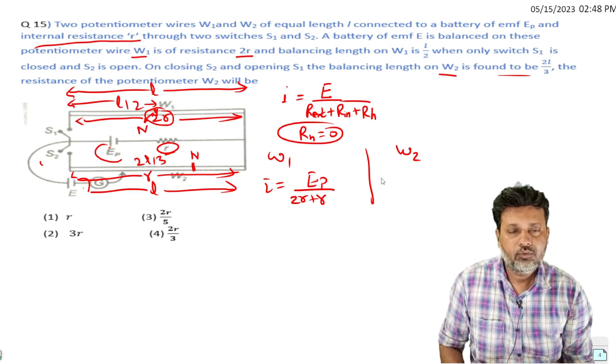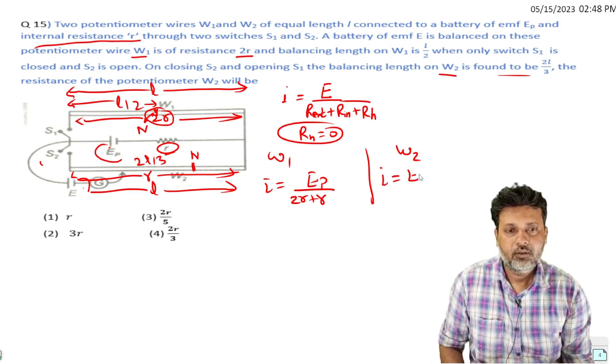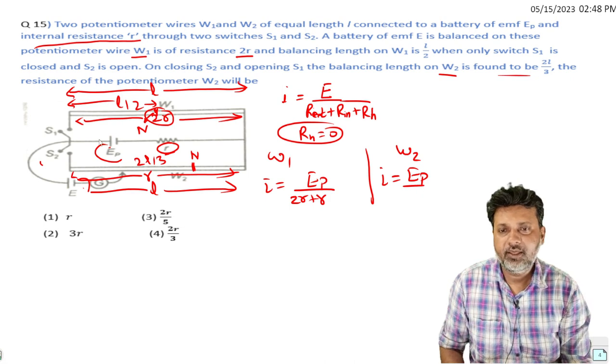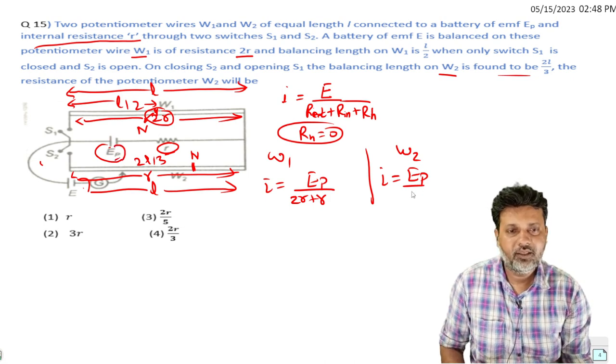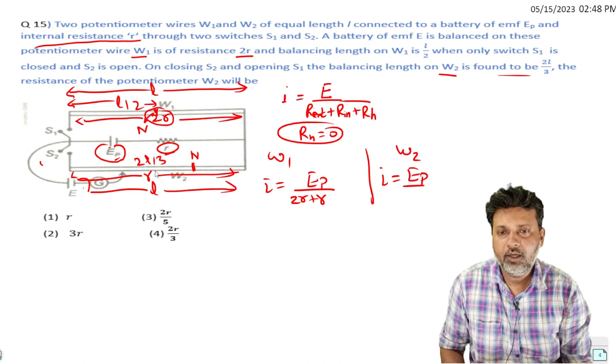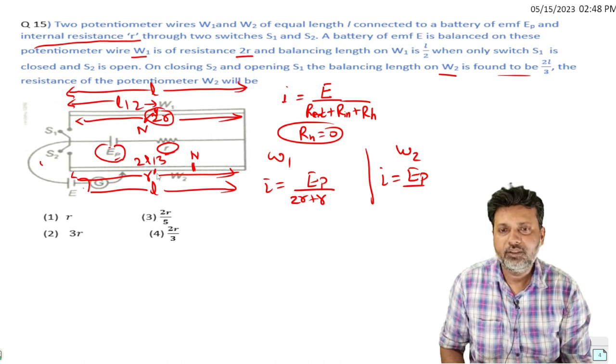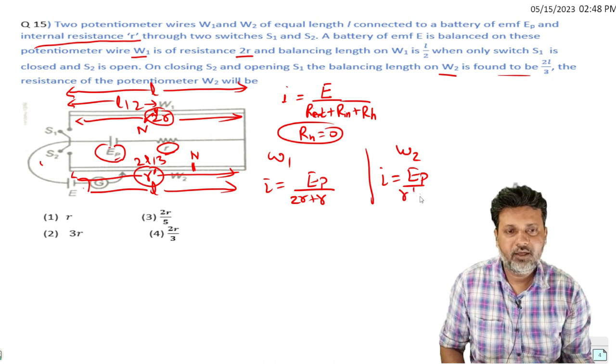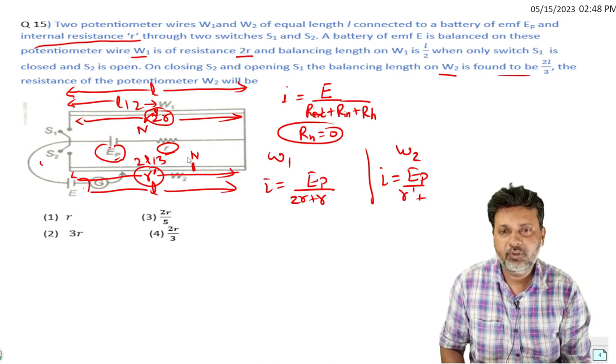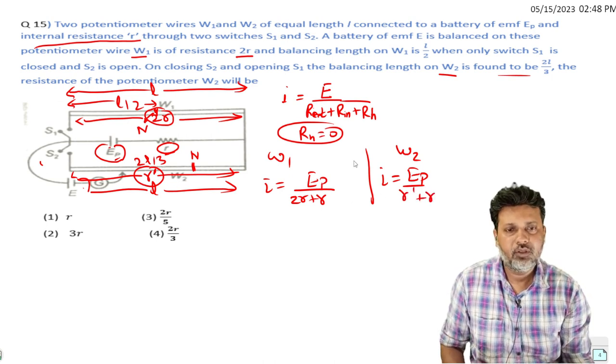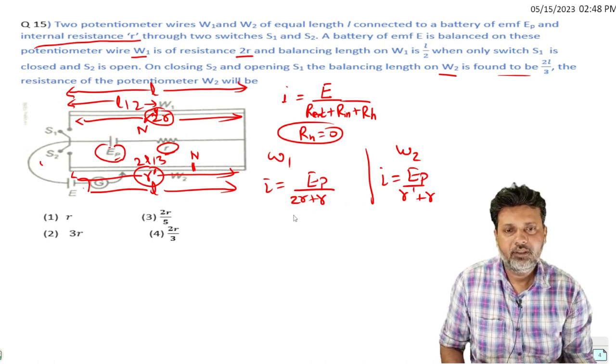So E_p divided by external resistance - let's call it r dash - plus internal resistance small r. The value of r dash needs to be found. r dash is the external resistance we need to determine.